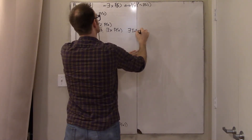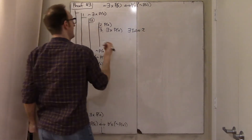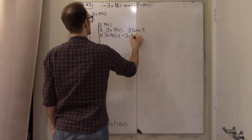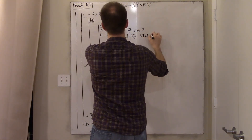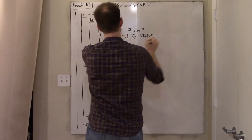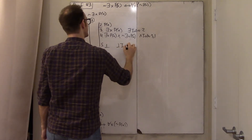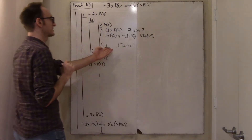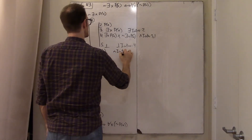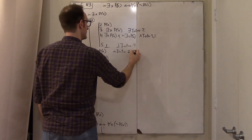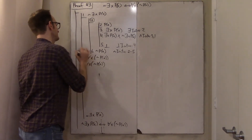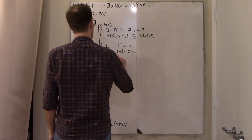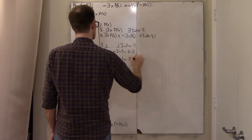That's existential intro from line two. Saying there exists someone with property P alongside line one — that there doesn't — gives us a conjunction, and intro lines one and three. This leads directly to bottom via bottom intro. Thus a doesn't have property P: negation intro lines two through five.